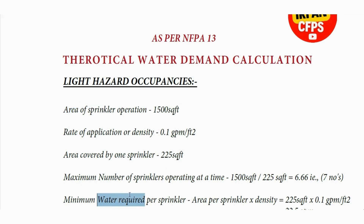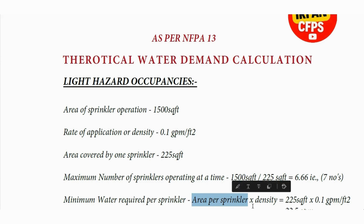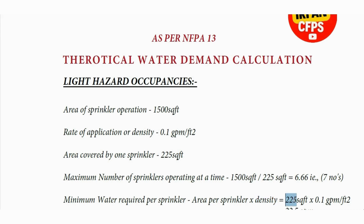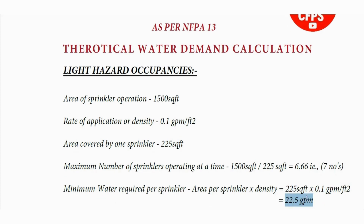Now we are going to calculate the minimum water required from one sprinkler. The formula is: area per sprinkler multiplied by density. Inserting the values — 225 square feet multiplied by 0.1 — we get 22.5 gallons per minute. So 22.5 GPM will be the flow from one sprinkler.